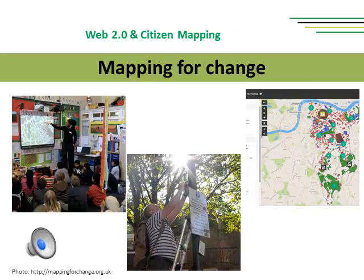Mapping for Change has already produced maps of actions related to climate change in London and other cities, and also works with local schools. It developed a project called Local Schools for Local Children to form a clearer picture about the variation in children's distribution. It also works with local authorities — for example, the Southwark Council commissioned an online community map to aid and support the Council's pledge to build 11,000 new homes.